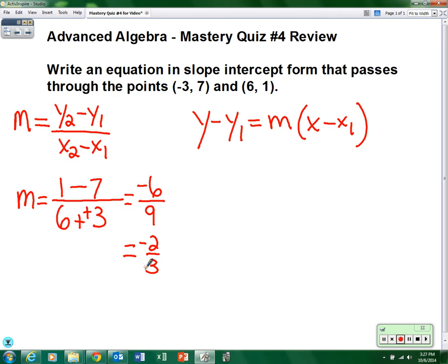Again, it doesn't matter if you pick the (-3, 7) or if you pick the (6, 1). I'm going to pick the (6, 1) so I don't have to deal with any negatives, but that's your choice. You will end up with the same answer no matter what.